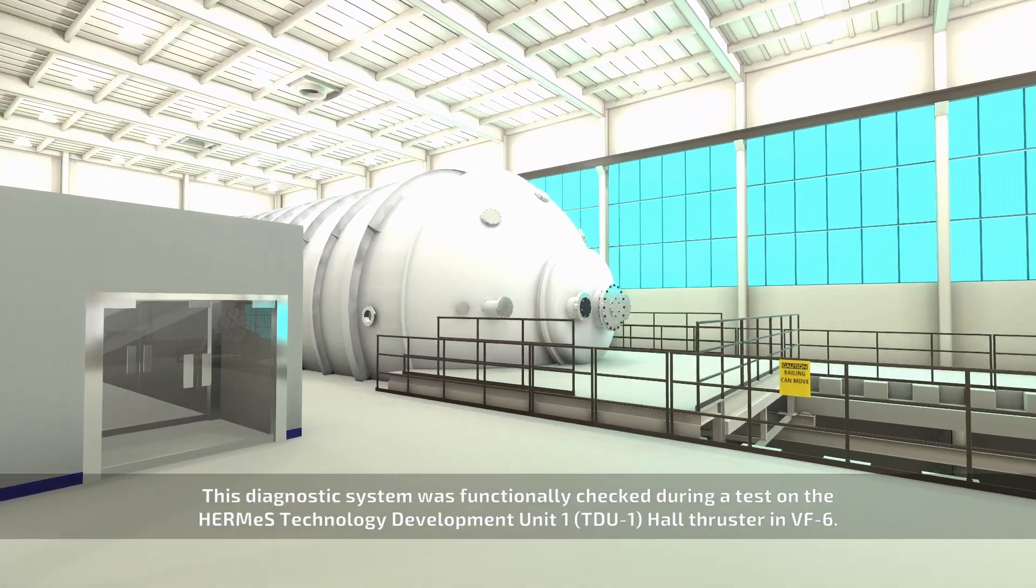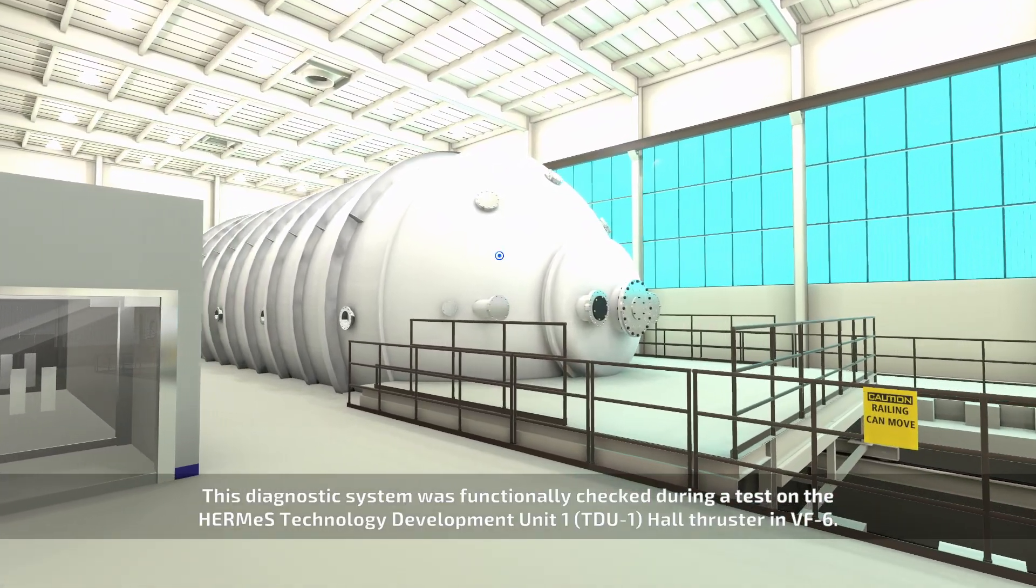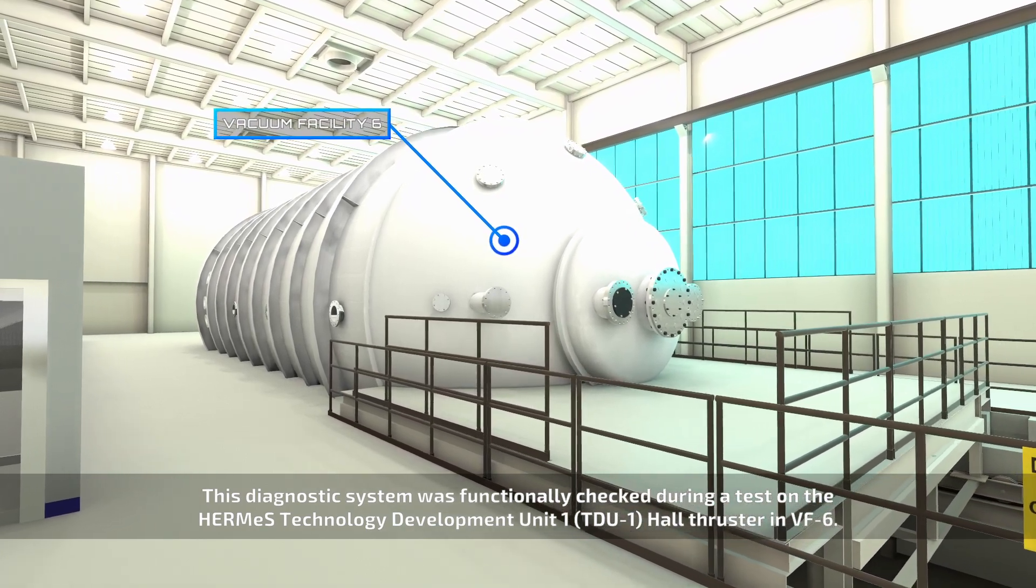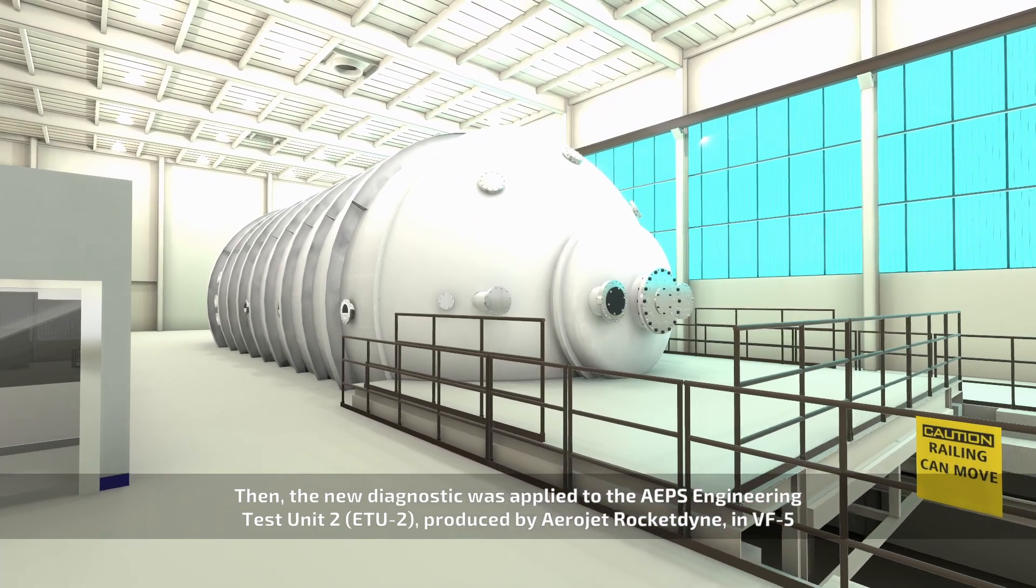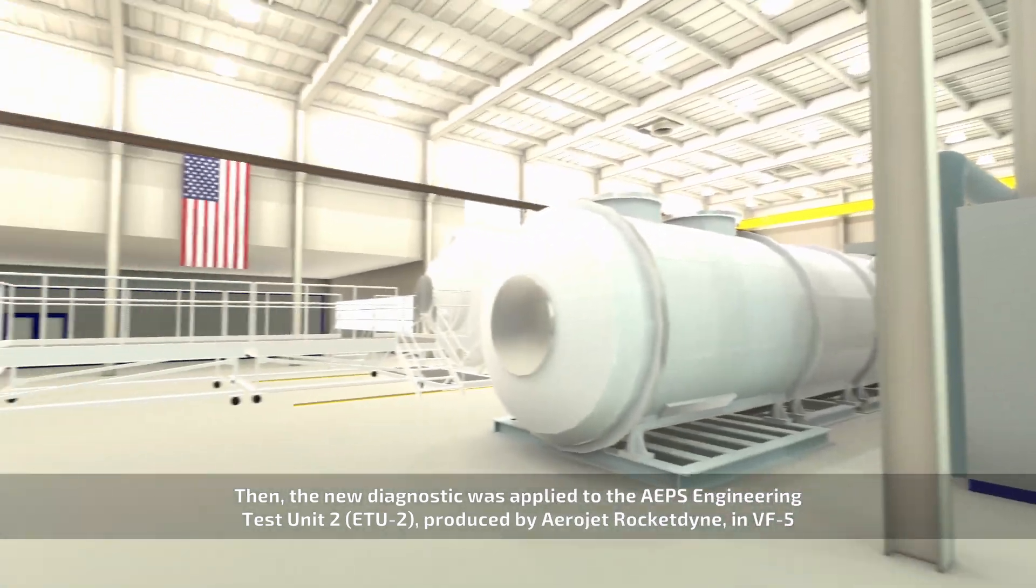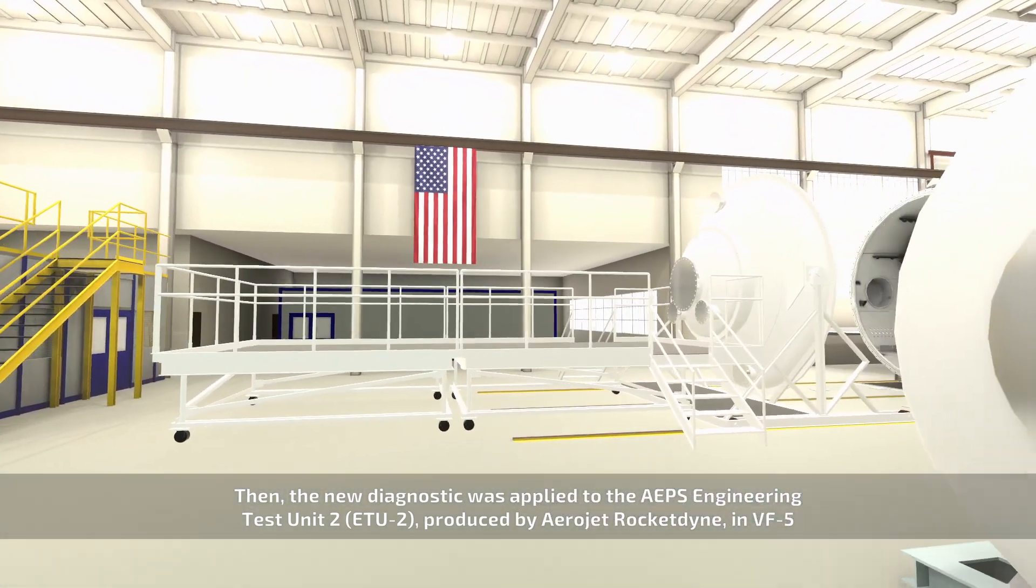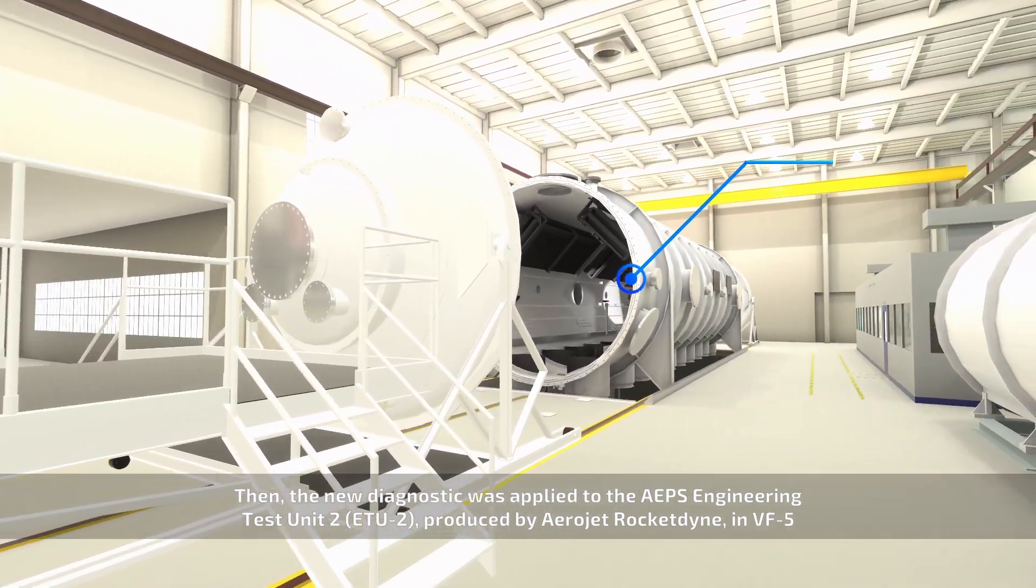This diagnostic system was functionally checked during a test on the Hermes Technology Development Unit 1 Hall Thruster in VF6. Then, the new diagnostic was applied to the AEPS Engineering Test Unit 2 produced by Aerojet Rocketdyne in VF5.